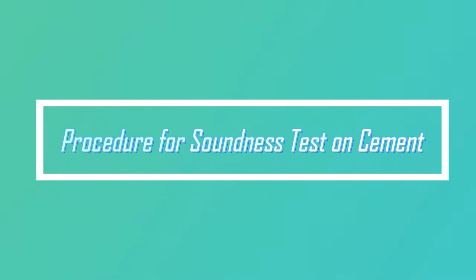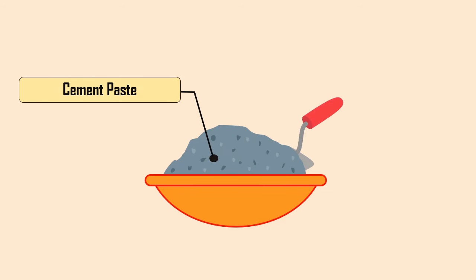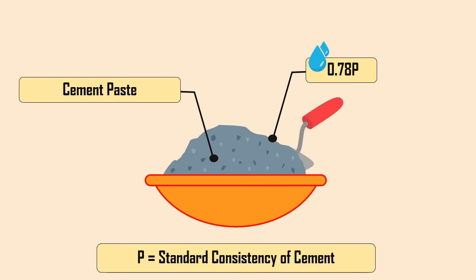Procedure for Soundness Test on Cement. Prepare a cement paste as directed in the consistency test, using 0.78 times the amount of water needed to achieve a standard consistency paste.